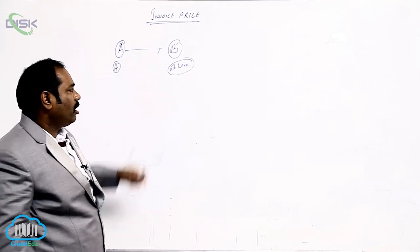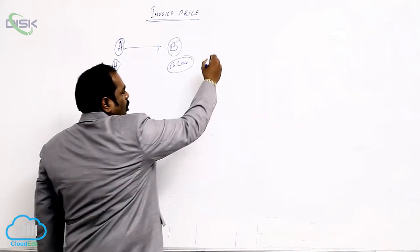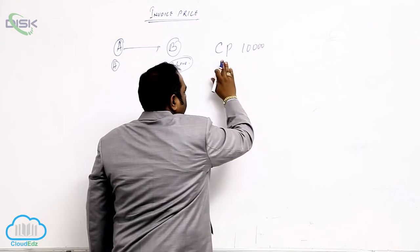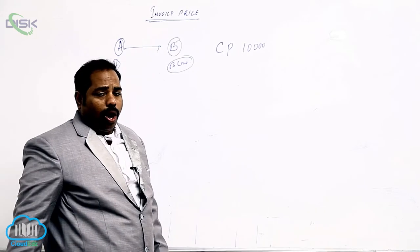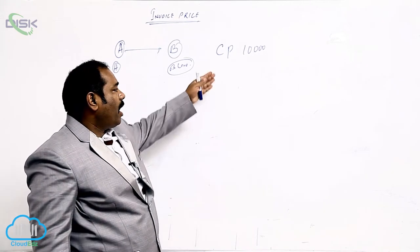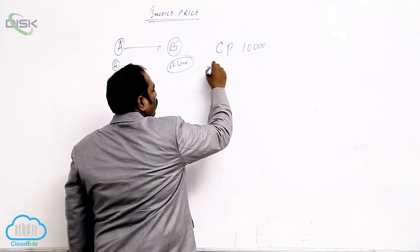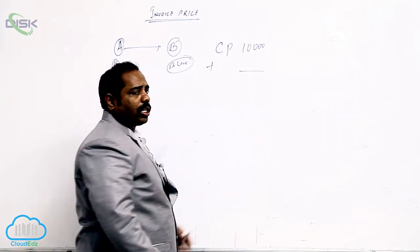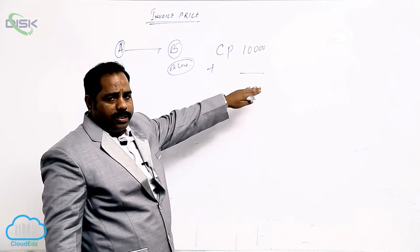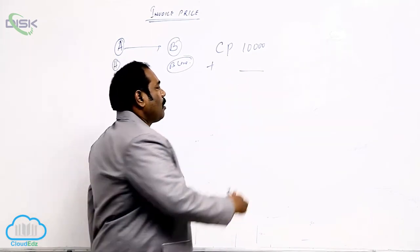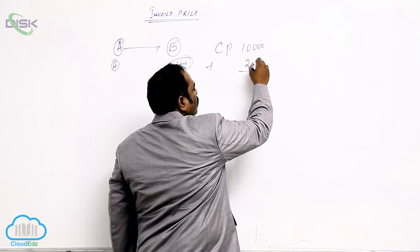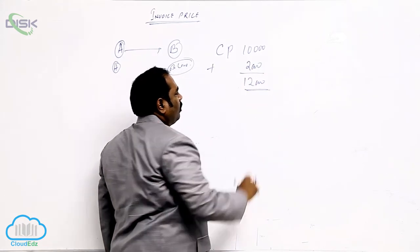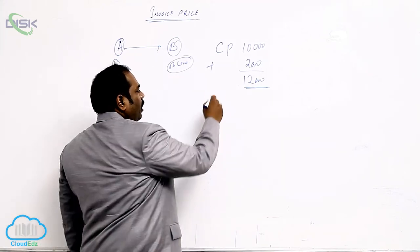So these goods can be sent at cost price. Suppose the cost price of the goods is 10,000. He can send the goods at cost price, or sometimes he may add extra profit — something above cost price. Suppose he is adding 2,000 rupees and sending the goods to the consignee. So this is called invoice price.